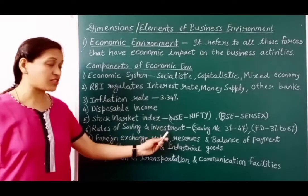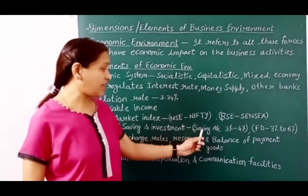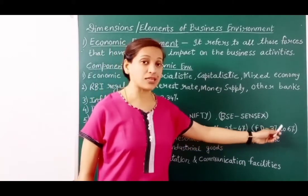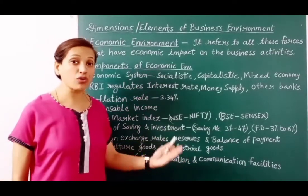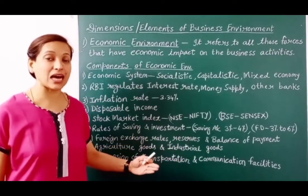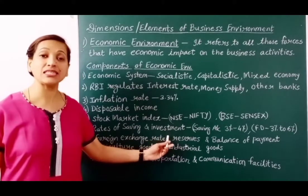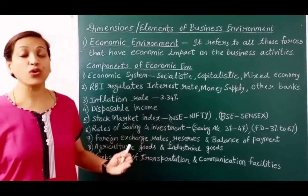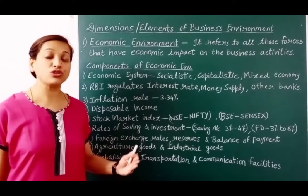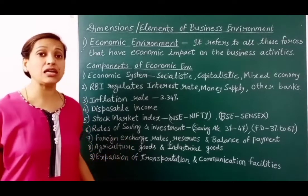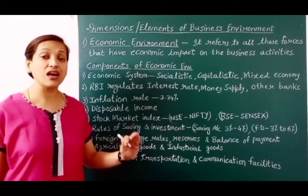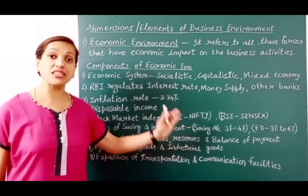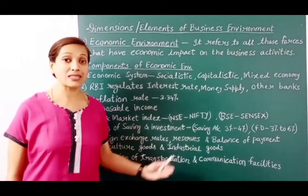The next is rates of saving and investment. The interest rate on saving accounts is generally 3–4% and on fixed deposits it is 3–6%, varying with bank, amount, and duration of deposit. Safe investment options include Public Provident Fund and LIC. During COVID-19, due to government economic policy changes, interest rates on safe investments fell and became taxable, leading many middle-income people to prefer the share market.